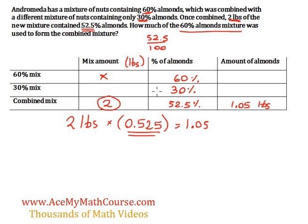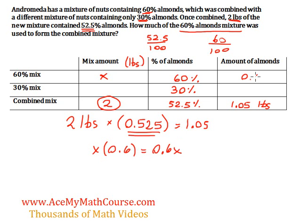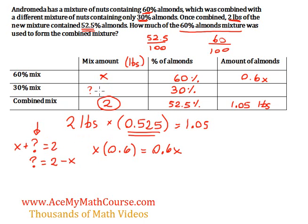For the amount of almonds in the top row, I have x times 60%. 60% is just 60 divided by 100, so that's 0.6, and I can rewrite that as 0.6x. Now we're missing information in the second row. I don't know what that is, but I know that x plus that unknown equals 2, because we're adding the 60% mix to the 30% mix to get 2 pounds. So the unknown equals 2 minus x.